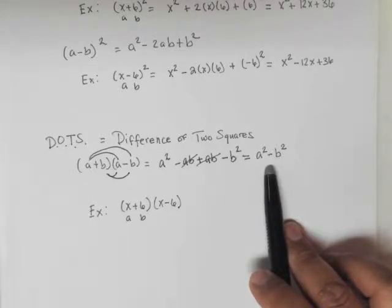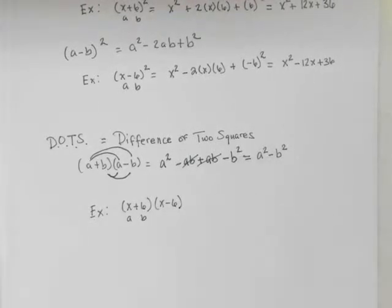Wait a minute, subtraction. Doesn't subtraction mean difference? Exactly. This is where the name comes from: difference of two squares. You're squaring two numbers and then subtracting them. Hence, the difference between two squares.